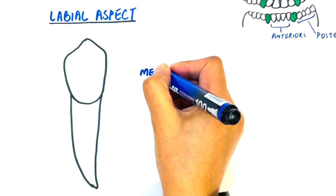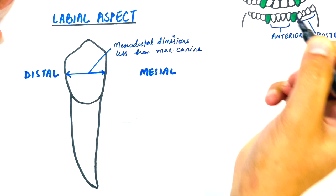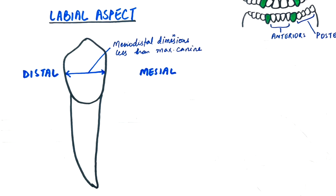The mesiodistal dimension of the crown is less than the mesiodistal dimension of the maxillary canine. The crown length is 11 mm which is 1 mm more than the length of the maxillary canine. The crown appears to be longer than the maxillary canine due to its 1 mm greater crown length and smaller mesiodistal dimension.